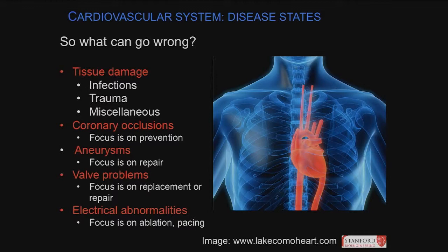Aneurysms are an outpouching of big or small vessels, mostly arteries. Valve problems — we talked about stenosis, and regurgitation is the opposite of stenosis: valves that are not tight but leaky. Then electrical abnormalities where there are issues in the electrical conduction pathway that we studied.